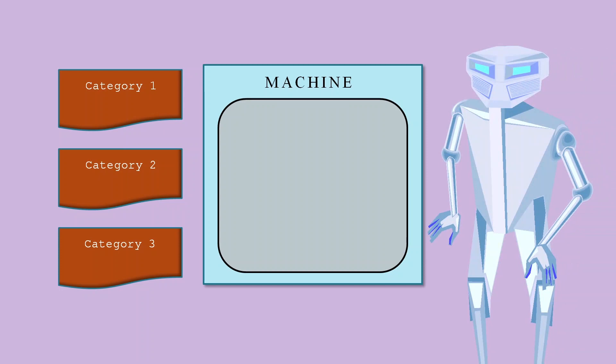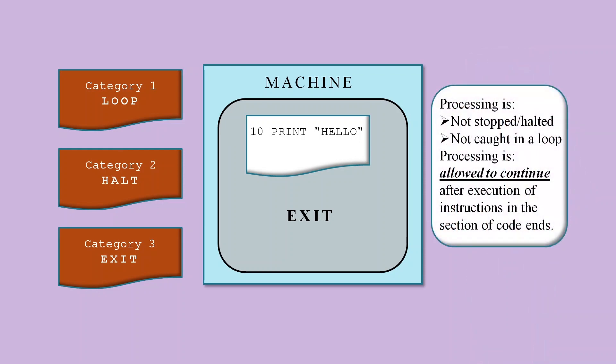Tara proposes that when we execute a section of code on a machine, the final processing state is not just halt or loop but can be one of three categories. The first category is an inescapable loop. The second category is where we have a machine level halt such as a shutdown instruction. And the third category is where the processing exits the section of code without doing a halt or a loop.